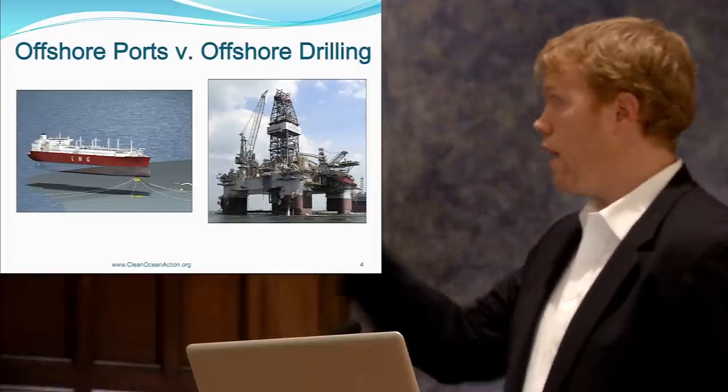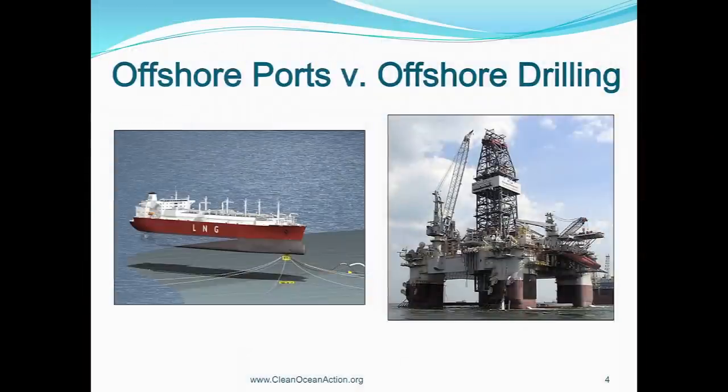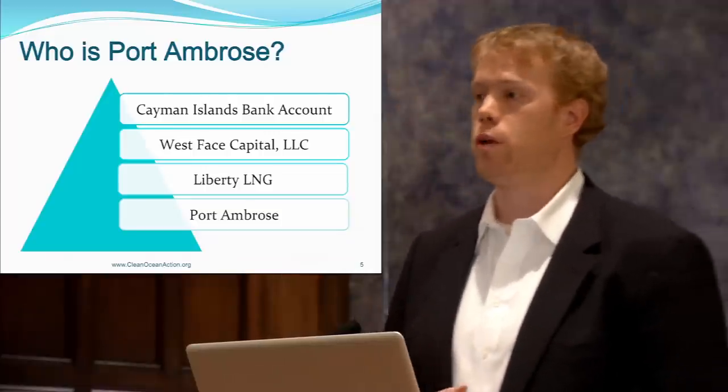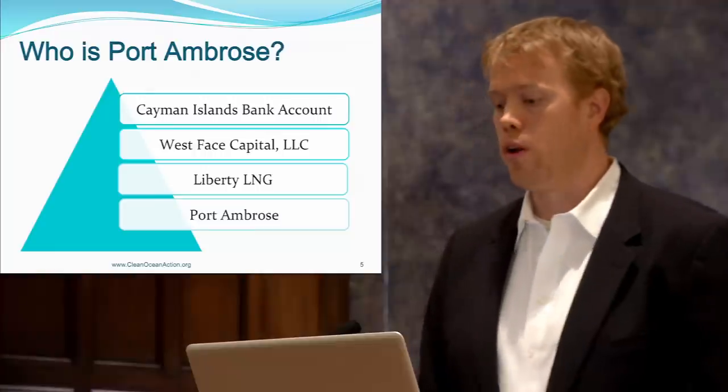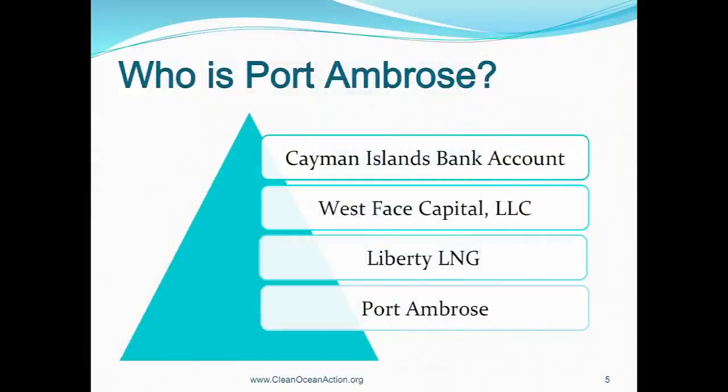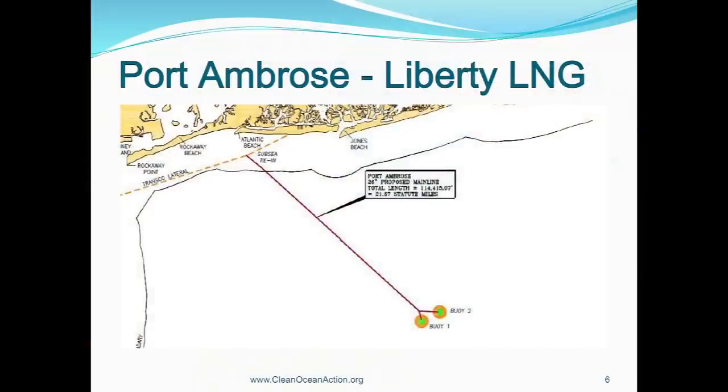What we're talking about today is the picture on the left here, which is Port Ambrose facility. Port Ambrose is, just to backtrack a little bit, because a lot of people are more familiar with things like BP and Shell and ExxonMobil. Port Ambrose, at the bottom, is a port application shell company that's owned by Liberty Natural Gas, Liberty LNG. Liberty LNG is in turn owned by West Face Capital, which is an investment manager in Toronto, Canada, that is owned by a Cayman Island bank account that we're not allowed to find any details for. So that's who they are. They're not ExxonMobil. They're not open to shareholders. They're owned by a Cayman Island bank account.